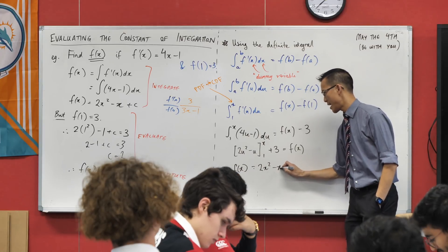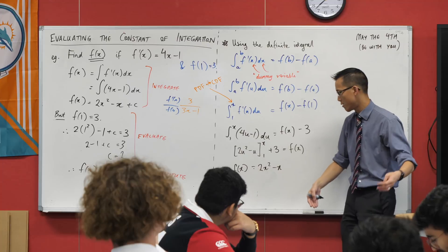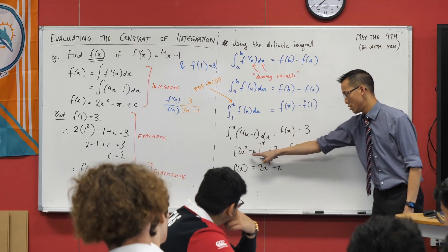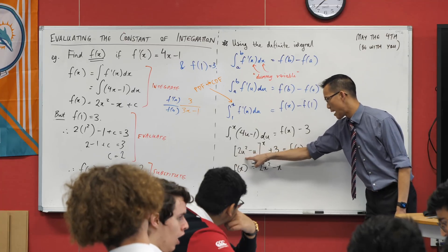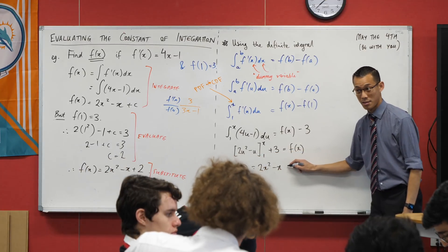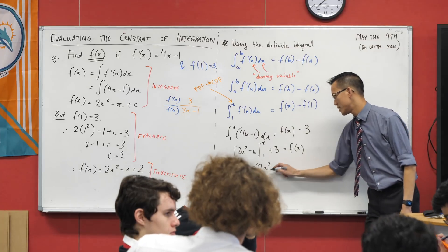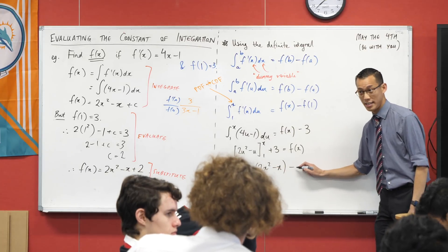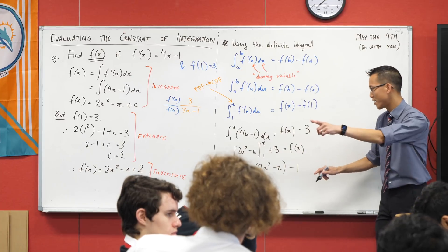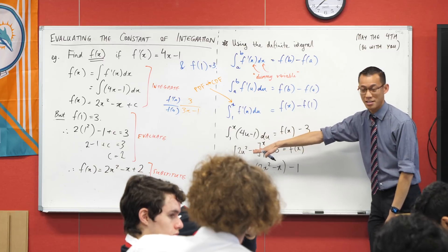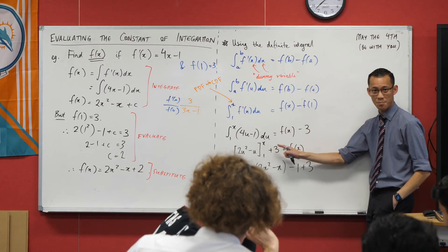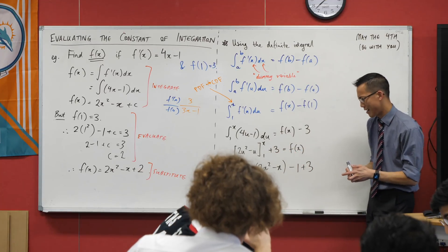2x squared minus x. I mean, you hardly even need to think, just changing one letter for another. What happens when you put one in here? You get two minus one. Is that right? Yes. So this is here, and I'm subtracting one. Yes. I haven't written—I've just done the integral and now I've got plus three. Is that okay?